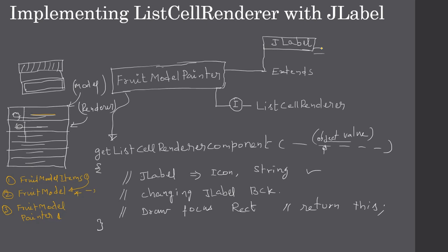Next we create the FruitModelPainter, which extends from JLabel - meaning each component is a JLabel. We also implement ListCellRenderer, which forces us to override the getListCellRendererComponent method. In that method we perform all the rendering tasks. This is the order the next video will follow.